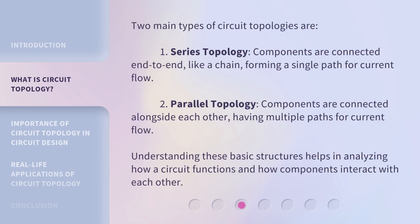Two main types of circuit topologies are: 1. Series topology — components are connected end-to-end, like a chain, forming a single path for current flow. 2. Parallel topology — components are connected alongside each other, having multiple paths for current flow. Understanding these basic structures helps in analyzing how a circuit functions and how components interact with each other.